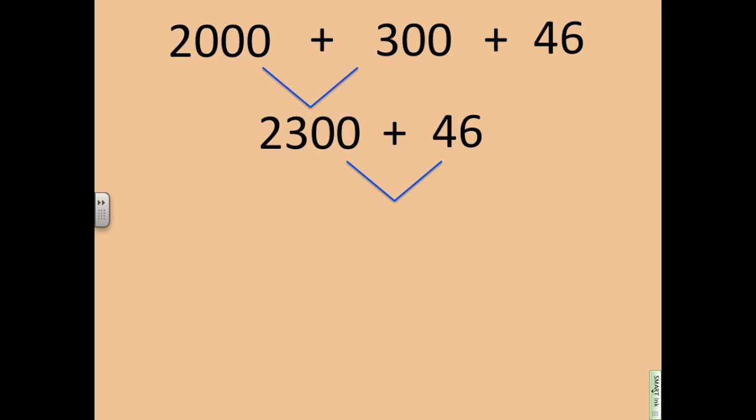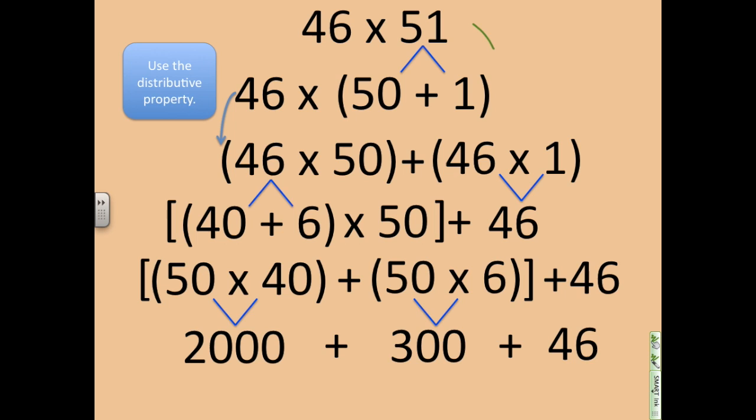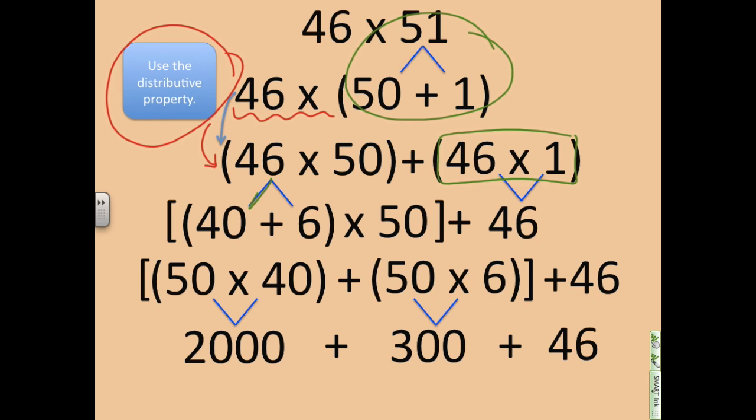My final answer will be 2,346. If we take a look back here at what it looked like when we started, we started by breaking apart the 51 into 50 plus 1. Then we identified that since we found a multiplier, we could use the distributive property and we rewrote the problem. We were able to solve 46 times 1 because that's mental math. But we had to break apart 46 into two separate groups and then reuse the distributive property in order to solve the whole problem mentally. So break it down into steps, as long as you rewrite the problem each time, it's much easier to solve it correctly.